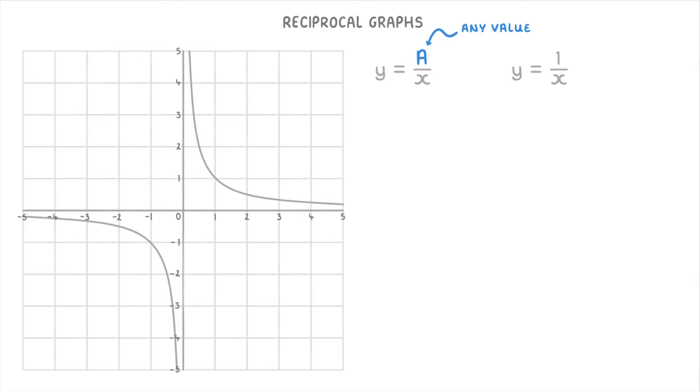As well as being able to recognize the graph, you also need to know that it's symmetrical in this line of y equals x, because this part is symmetrical to this part. And it's also symmetrical in this line of y equals minus x, because this part is symmetrical to this part.